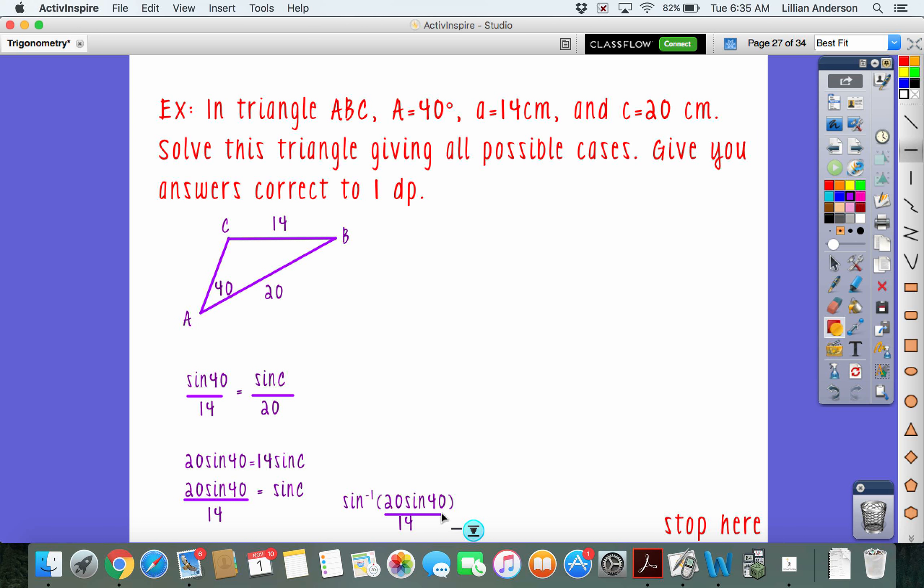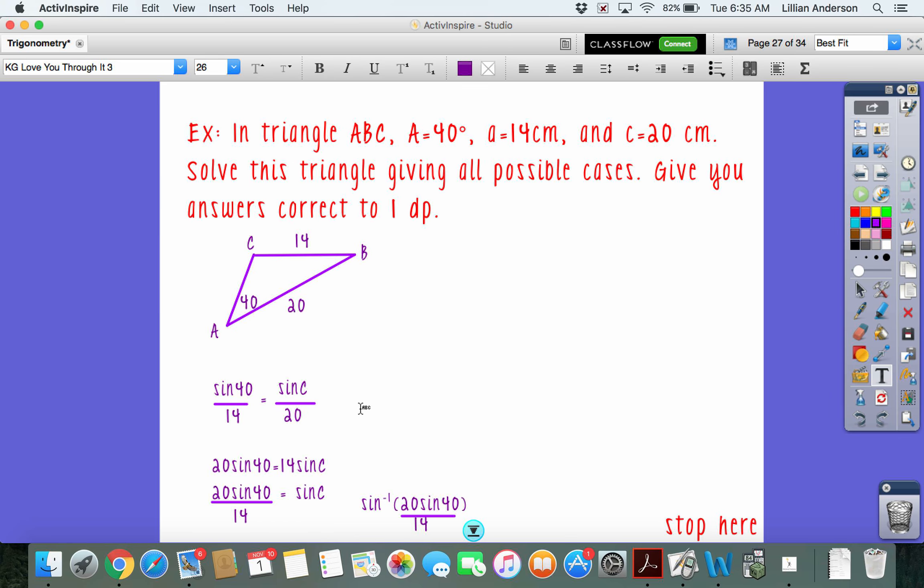And as we round to one decimal place, now do please put 20 sine 40 divided by 14 all in the parenthesis. Because that's what you're taking the sine inverse of. And then you should get that C is about 66.7. Because we are rounding to one decimal place.